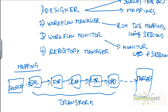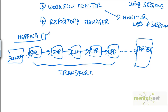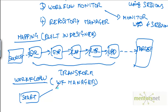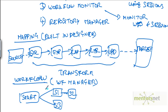A mapping is built in the Designer tool, and a workflow is built in Workflow Manager. A workflow looks like: Start, then Session 1, Session 2, Session 3 — some could be in parallel with Session 1. Any combination of serial and parallel sessions can be there. Each session calls a mapping — Session 1 calls M1, Session 2 calls M2, Session 3 calls M3. When you start a workflow, multiple sessions run in sequence or parallel as designed.